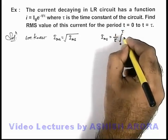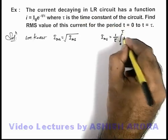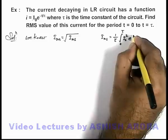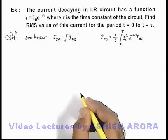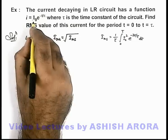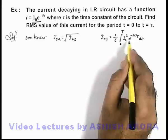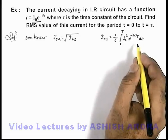i square dt, which can be written as here i-not square e to power minus 2t by tau dt. This will give us the mean square value of this current because I have squared the value of current and I am taking its average by using the average function.